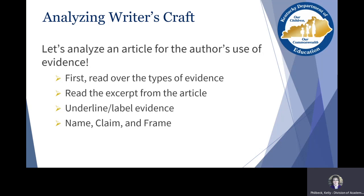When you start this process, you always want some type of mentor text that does a good job of presenting the information you want to relay. We're going to be looking at an article today from Discover Magazine. We're first going to refresh our memory on some basic types of evidence that writers can use, then go to that article and look at short excerpts so you can see what the writer does with evidence.